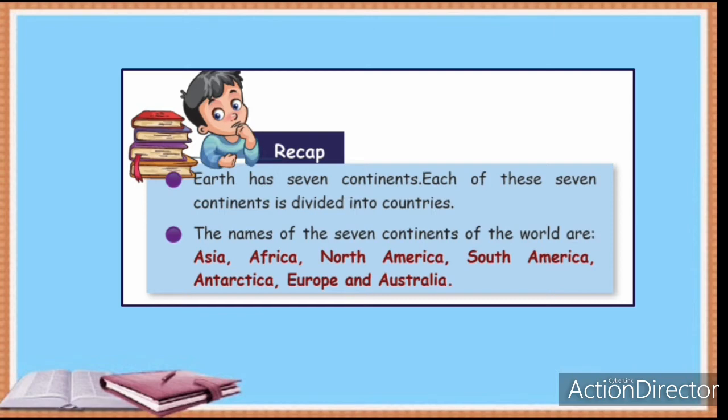Africa is the second largest continent in the world. It has the River Nile, the longest river in the world, and the Sahara Desert, the largest desert, is situated in Africa. Importantly, 50% of the world's gold and diamond comes from Africa. Some countries in Africa are Sudan, Kenya, Egypt, and Zimbabwe.